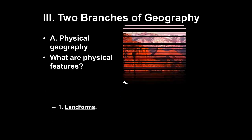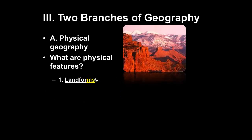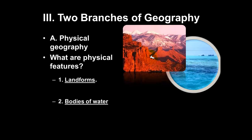The two branches of geography: physical geography is the study of the earth's physical features. Physical features include landforms — all of the naturally occurring formations on planet earth, such as mountains, forests, canyons, and cliffs, things created by nature. Another physical feature is bodies of water — the naturally occurring lakes, rivers, oceans, and streams on the planet.